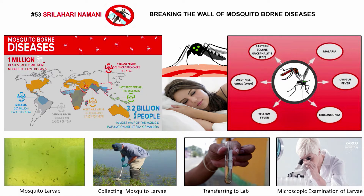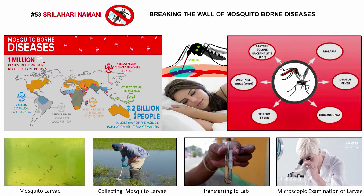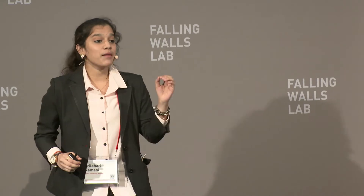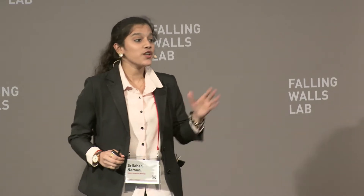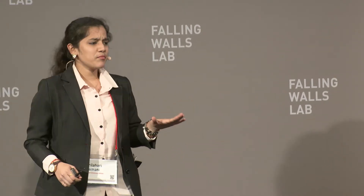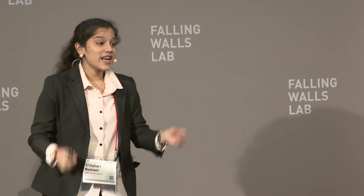So to prevent and control these diseases, it is essential to identify the mosquito species and make people aware of it. The conventional method to do this is by laboratory observation on the larvae samples, which is a time-consuming process.